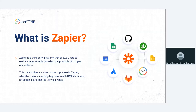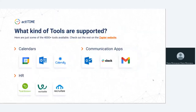Let's take a look at the kind of tools that are available. Zapier already has over 4,000 tools available. You can check out the full list on the Zapier website — we've included a link in the presentation. For our purposes here, we're going to introduce you to some of the main categories and popular tools.